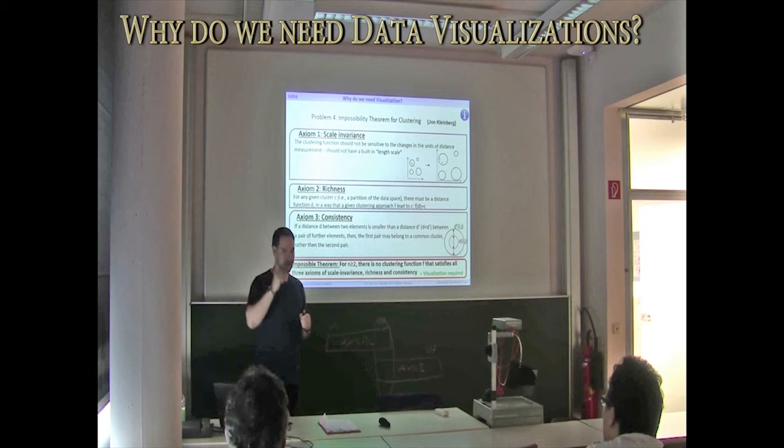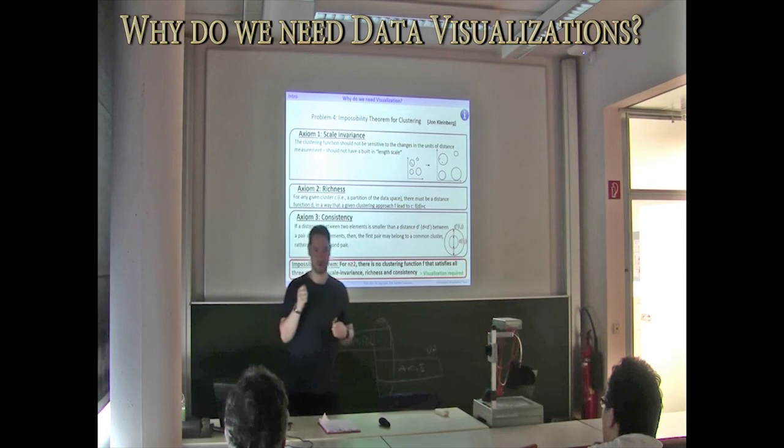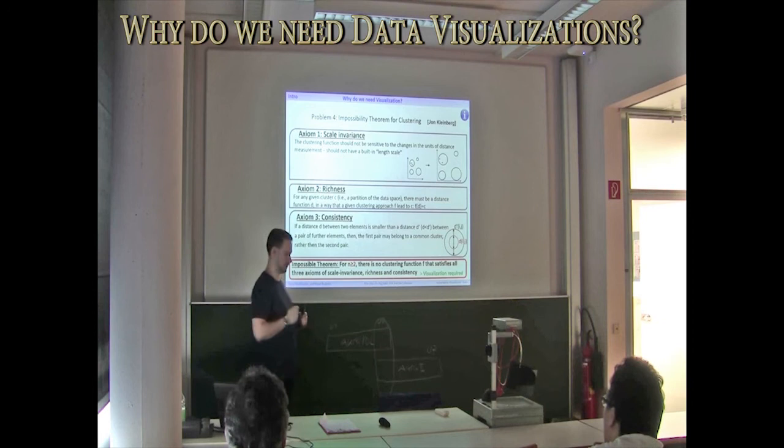This means, in reverse, there could be structure information in your data where you're not able to find a certain distance measure. This means an automatic approach wouldn't give you this result.